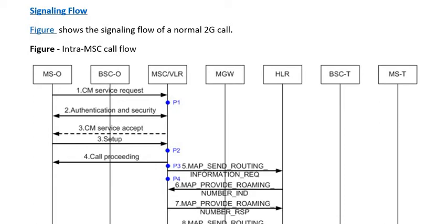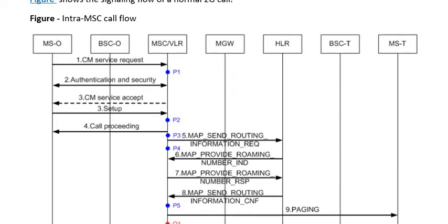The HLR involved belongs to the called party, for which the routing information procedure will be served. The first message received at the MSC for call origination is the CM Service Request message. In response, the MSC initiates the authentication and security procedure, which authenticates the originating mobile station.